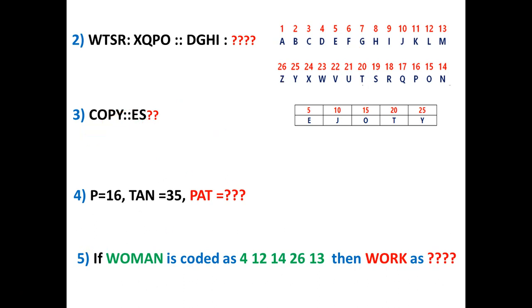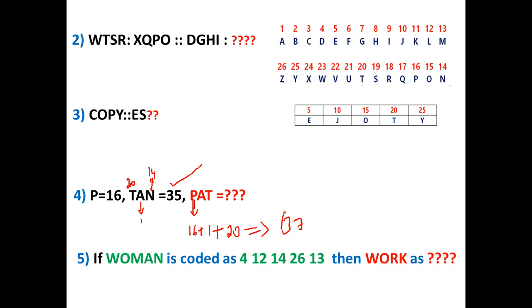Next question: P is equal to 16. T means 20, A means 1, N means 14. If you add: 20 plus 1 plus 14 equals 35. We have been given the hint that P is equal to 16, A is 1, and T is 20. So 21 plus 16 is 37 — that is the answer for this question.